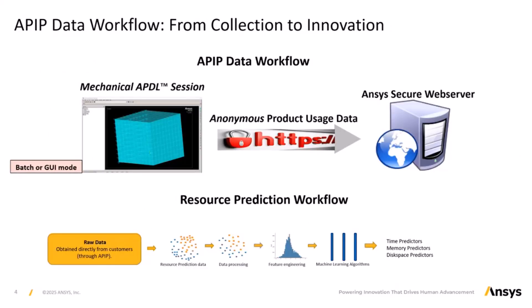This is how the APIP workflow goes. The mechanical APDL application begins collecting anonymous usage data during each session. Once the session concludes, the data is transmitted by HTTP to a secure ANSYS web server. From there, ANSYS developers analyze the aggregated data to build new features, such as the resource prediction tool. Using APIP ensures that you directly contribute to the continuous improvement of ANSYS products, creating a cycle of innovation driven by real-world applications.